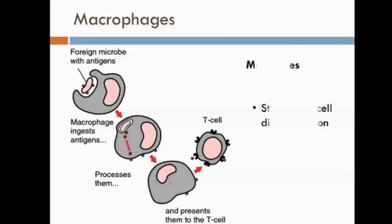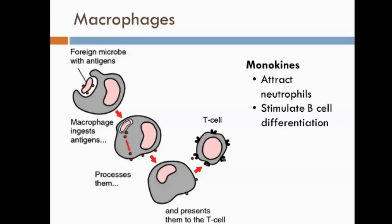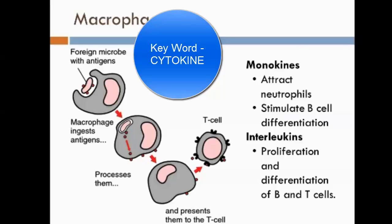Macrophages also release cytokines — chemical messages that instruct other things to happen. There are two types of cytokines: monokines, which attract neutrophils by a process called chemotaxis, and interleukins, which have a role in stimulating B and T cells.